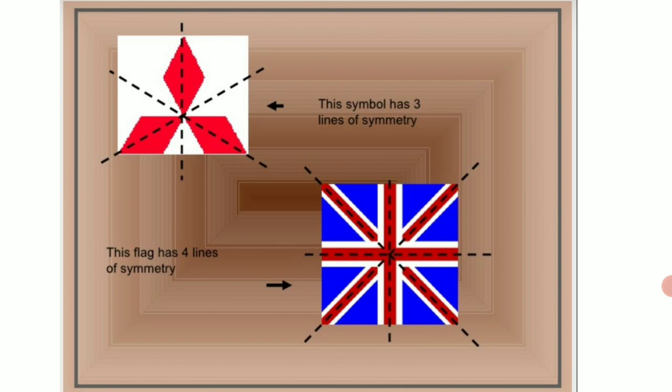So one is the vertical symmetry and the other two are the diagonal symmetries. Now let us come to the union jack. It is having four lines of symmetry, the vertical, the horizontal and two diagonal symmetries.